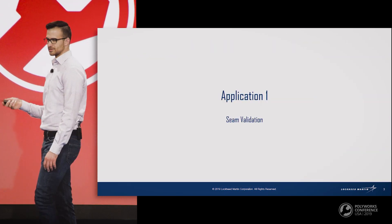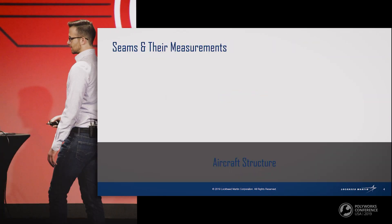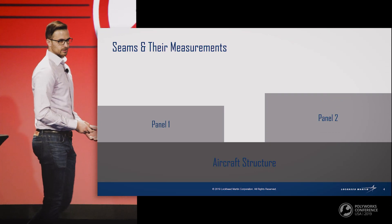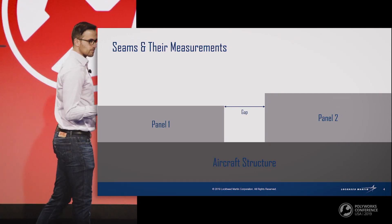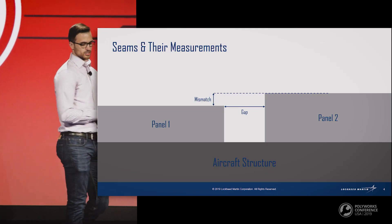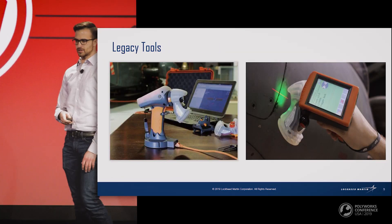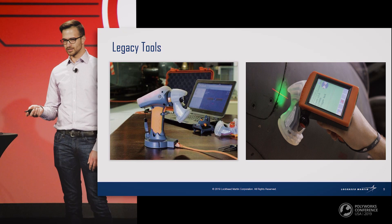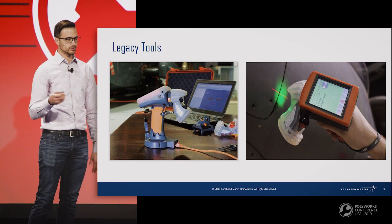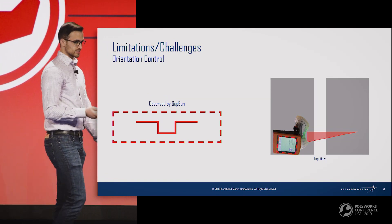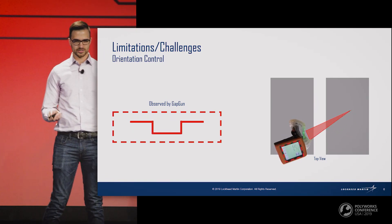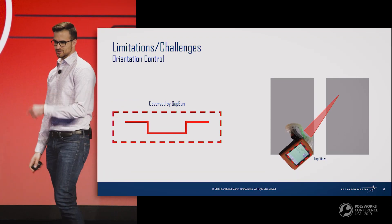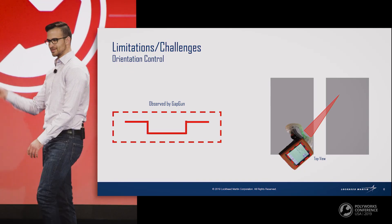That brings us to our first application: seam validation. Assuming that the dark gray box is the aircraft structure and we install a couple panels on it, we end up with a seam. We're interested in the gap measurement between those two panels, as well as the mismatch measurement. What we have been using to get these measurements is a device called the gap gun, which is essentially a 2D laser profilometer with built-in analysis capabilities. But being a 2D measurement device, it does have some limitations — the orientation at which you hold it relative to your seam changes the observed geometry, giving you different measurements. We are the people searching for the truth, so no bueno.